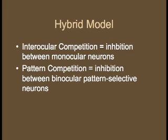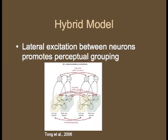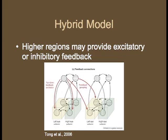To address these questions, some researchers have proposed hybrid models for binocular rivalry, which combine many of these other theories. This particular model was proposed by Tong, Meng, and Blake. They propose that in binocular rivalry, both interocular competition and pattern competition take place. Interocular competition involves inhibition between monocular neurons, while pattern competition involves inhibition between binocular pattern-selective neurons. In this image, we see pattern competition and interocular competition, denoted by the blue lines. Here we see that lateral excitatory connections between neurons promotes perceptual grouping, denoted by the red arrow. This grouping coordinates the activity between neurons that represent separate regions of visual space. Finally, we see that higher regions may provide excitatory or inhibitory feedback, which either contributes or detracts from rivalry.